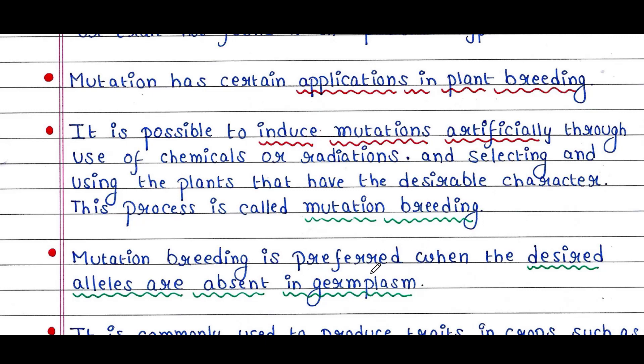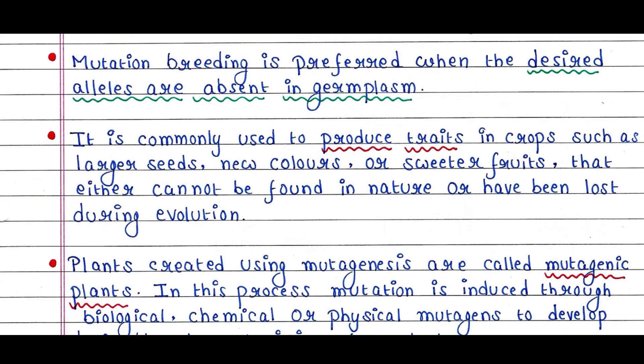Mutation breeding is preferred when the desired alleles are absent in the germ plasm. For example, in the disease resistant plant, the desired trait induced after mutation was not present in any of its parents — so the desired alleles are absent in germ plasm. It is commonly used to produce traits such as larger seeds, new colors, or sweeter fruits that either cannot be found in nature or have been lost during evolution.